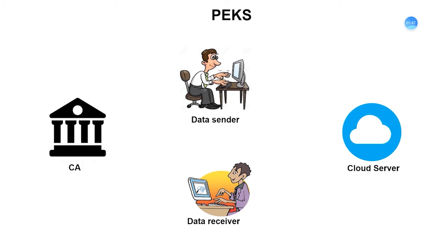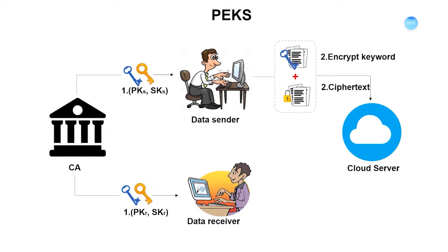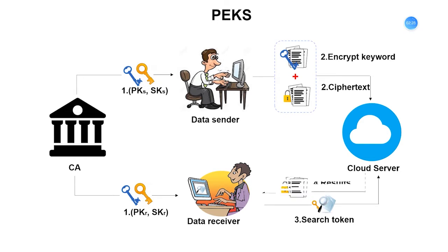Now we will give an overview of PEKS in detail. As shown in the slides, there are four entities in a PEKS scheme. First, the CA distributes public key and secret key pairs for data senders and data receivers. Second, the data sender encrypts keywords with the public key of the data receiver and encrypts files via a symmetric encryption algorithm. Third, once the data receiver wants to search for files containing a specific keyword, he submits a search token generated by his own secret key to the cloud server. Finally, the cloud server performs the search operation over the keyword ciphertext with the aid of the search token. In general, PEKS is a practical cryptographic primitive to enable different users to share encrypted data with each other.